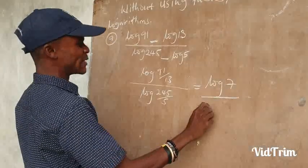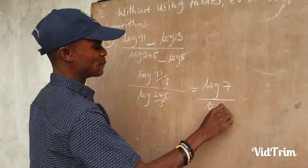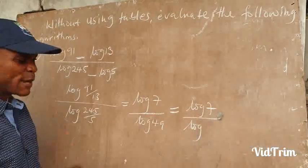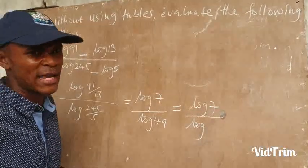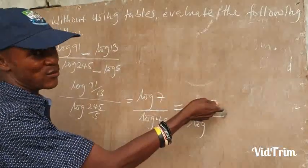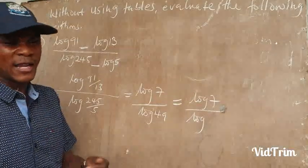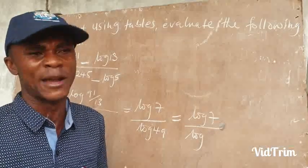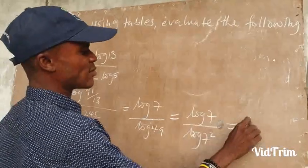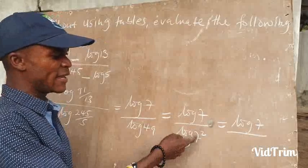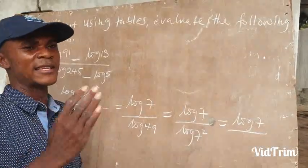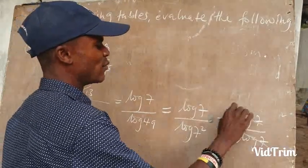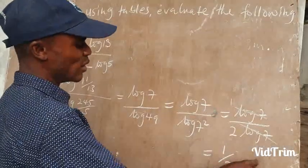91 divided by 13 is 7, and 245 divided by 5 is 49. That becomes log of 7 divided by 49. If I want to write 49, the simple term is 7 times 7, which is 7 squared. There was a theory that says anytime a log is raised to a power, you drop that power down. So I bring the 2 down, giving 2 log 7 divided by log 7 — that is 1 divided by 2. The answer is 1 over 2.